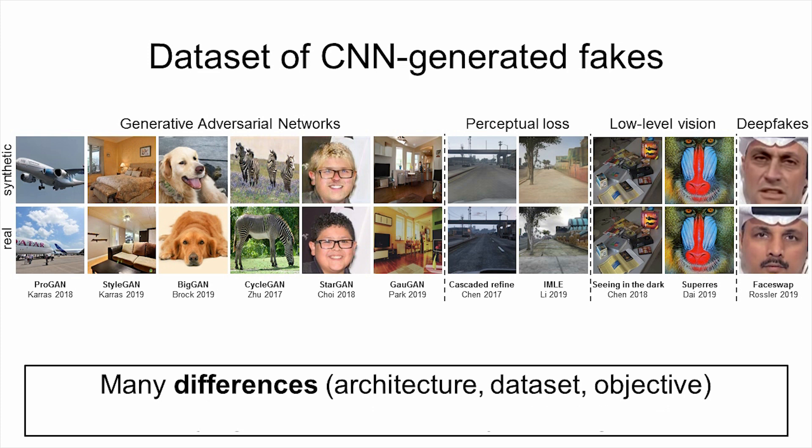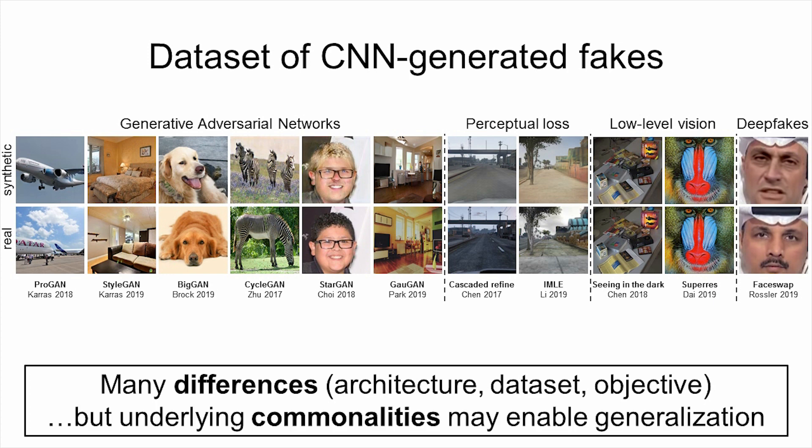We study whether it is possible to have a universal detector that generalizes to all CNN-based image synthesis networks. The methods we collected have vastly different architectures, datasets, and objectives. Similarly, a future model can be drastically different from the current ones, and these domain gaps make generalization difficult. However, is there a generic fingerprint left by CNNs that makes them distinguishable from real images, and can we train a detector that detects such fingerprints?